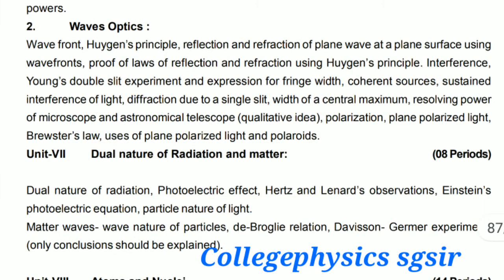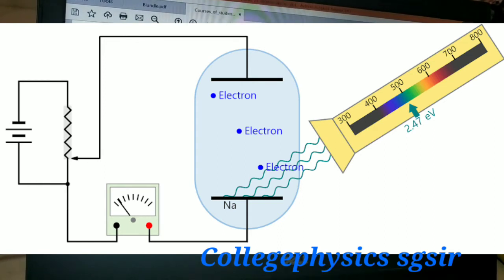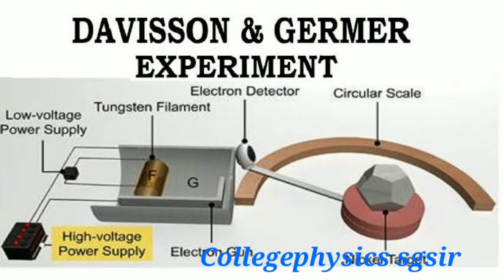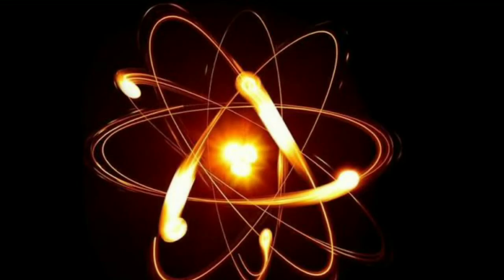Unit 7 is Dual Nature of Radiation and Matter. We discuss the photoelectric effect, Einstein's photoelectric equation, the particle nature of light, matter waves, wave nature of particles, de Broglie's relation, and the Davisson-Germer experiment.